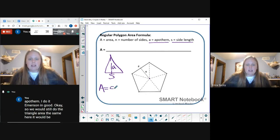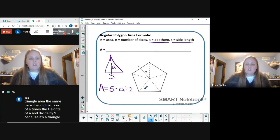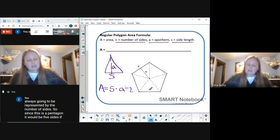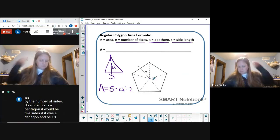We would still do the triangle area the same here. It would be base of s times the height of a and divide by two because it's a triangle. Now because all of these triangles are the same, I just need to physically count how many triangles there are, and the number of triangles is always going to be represented by the number of sides.